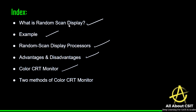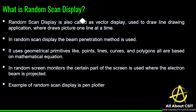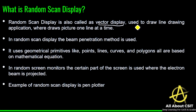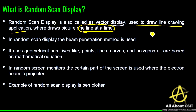A random scan display is also called a vector display. It is used to draw line drawing applications where pictures are drawn one line at a time — this is a very important point. The main concept of random scan display is allowing line drawing applications, and pictures are drawn one line at a time. In random scan display, the beam penetration method is used.